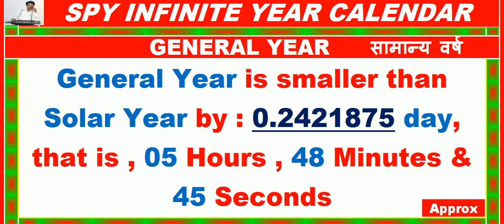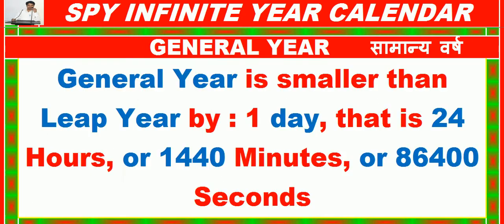One general year is smaller than the solar year by 0.2421875 day, that is 5 hours, 48 minutes and 45 seconds. One general year is smaller than a leap year by 1 day, that is 24 hours, 1440 minutes, or 86,400 seconds.